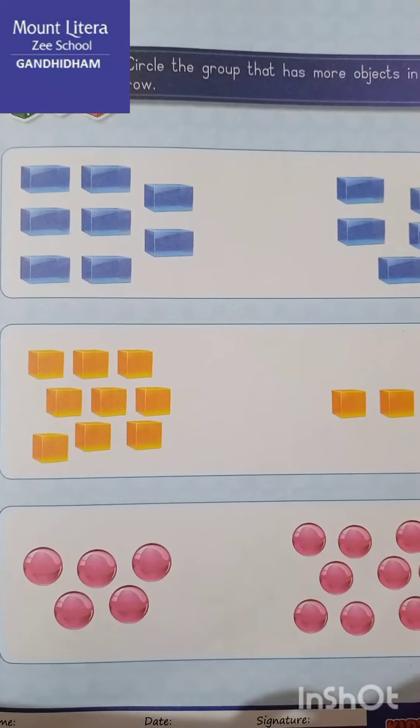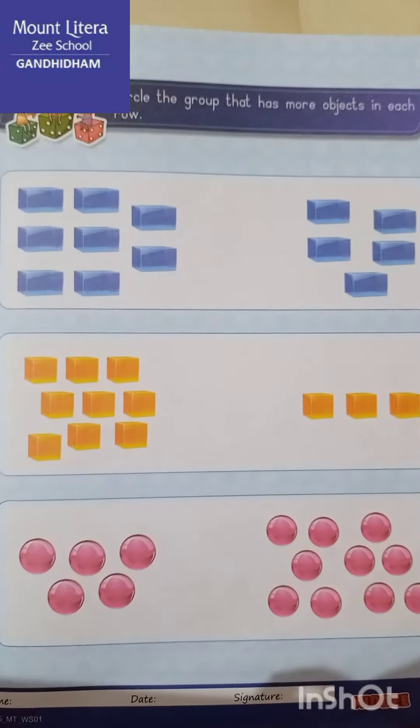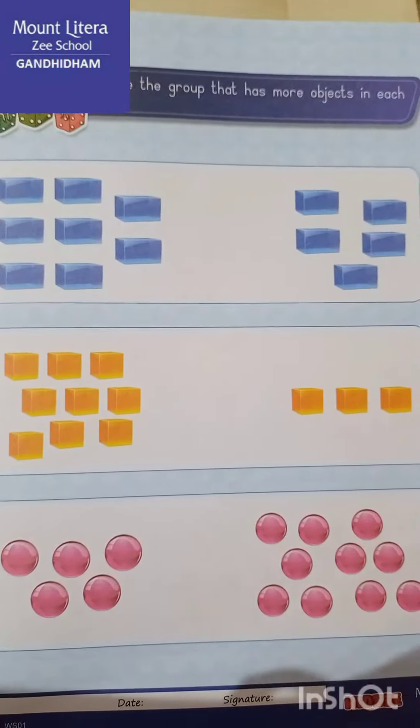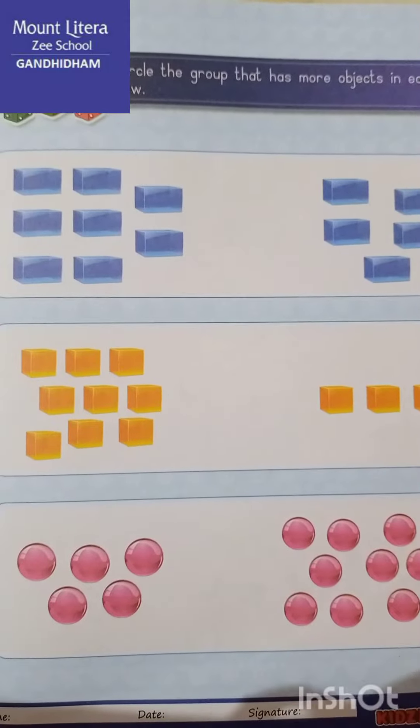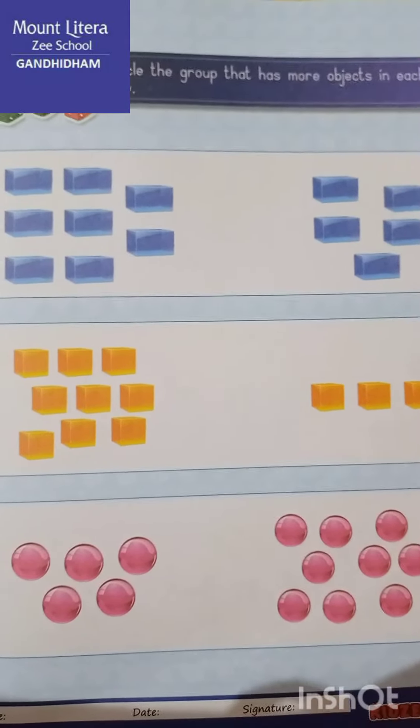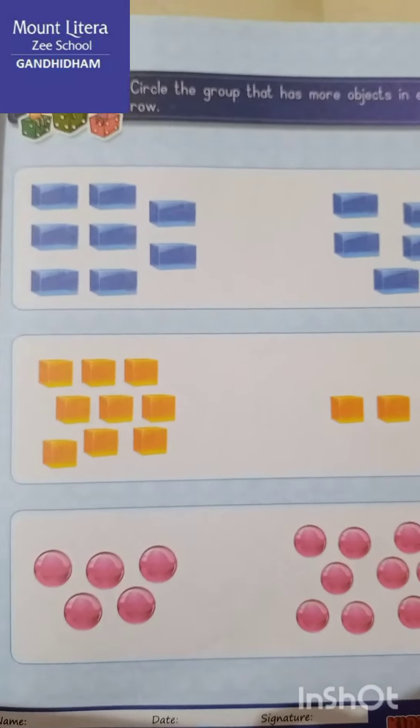Good morning dear students. Today's worksheet title is circle the group that has more objects in each row. मतलब उस group को circle करना है जिसमें ज्यादा objects है. More means ज्यादा, जिसमें ज्यादा objects है उसको क्या करना है? Circle करना है, okay.